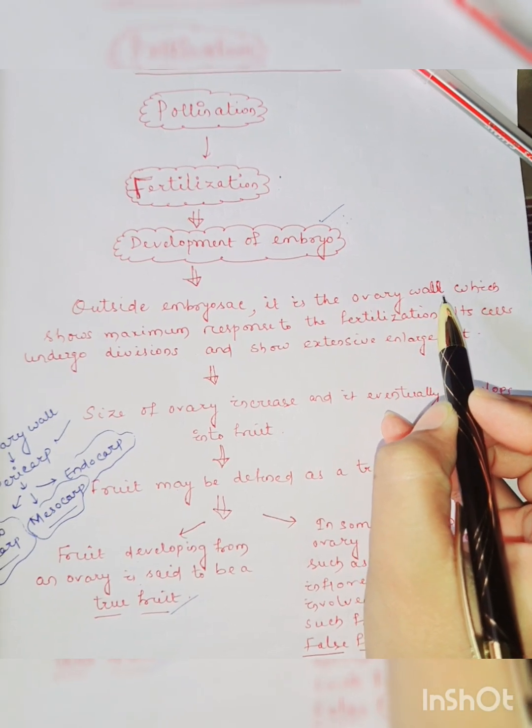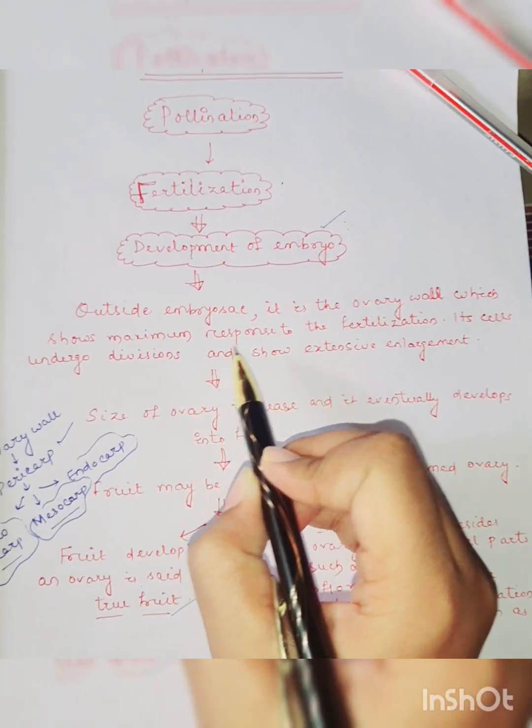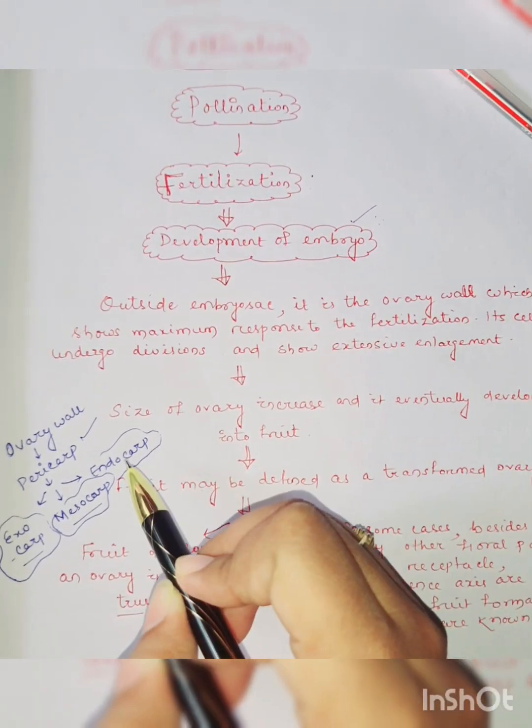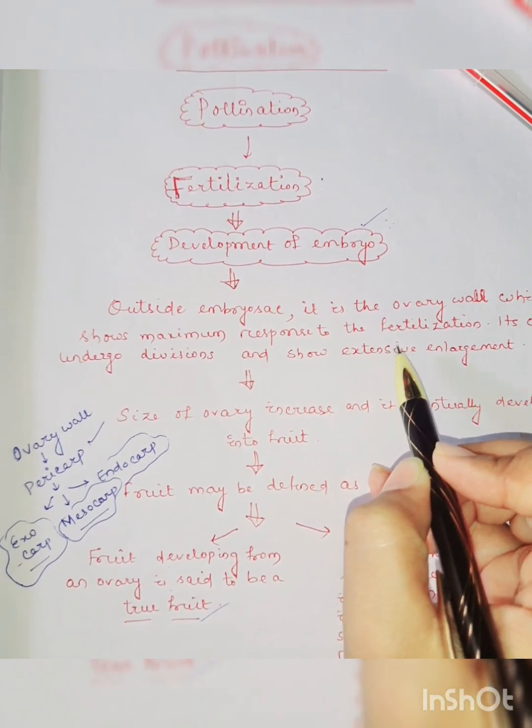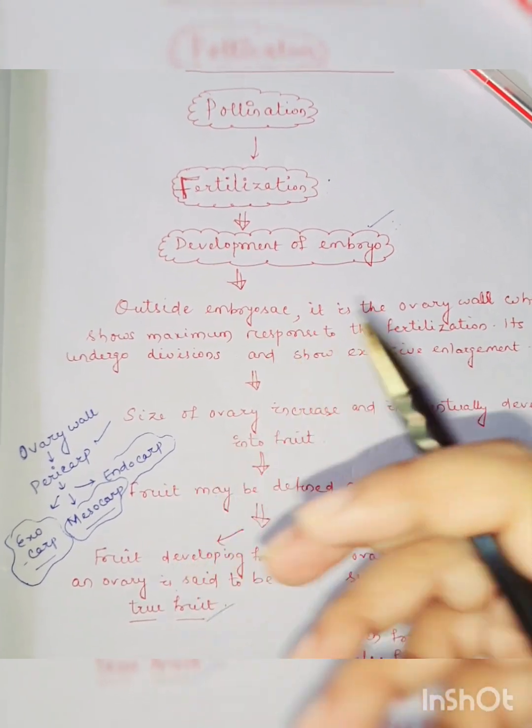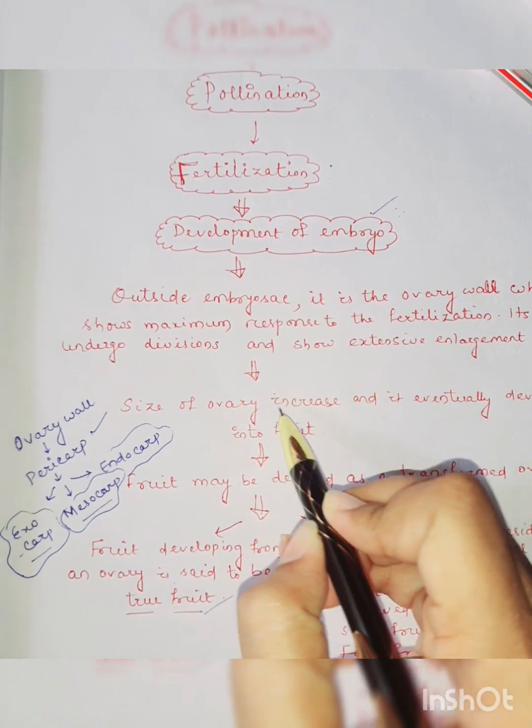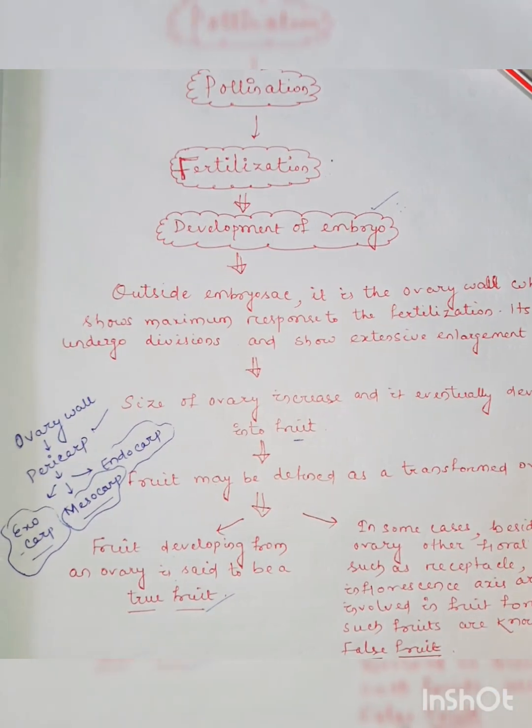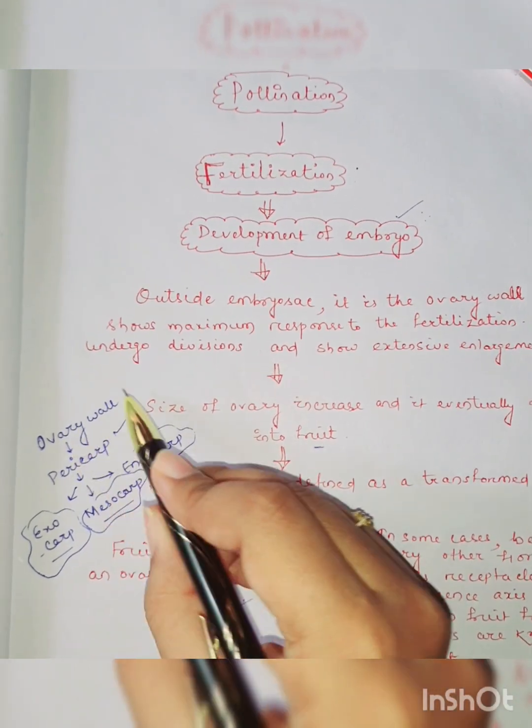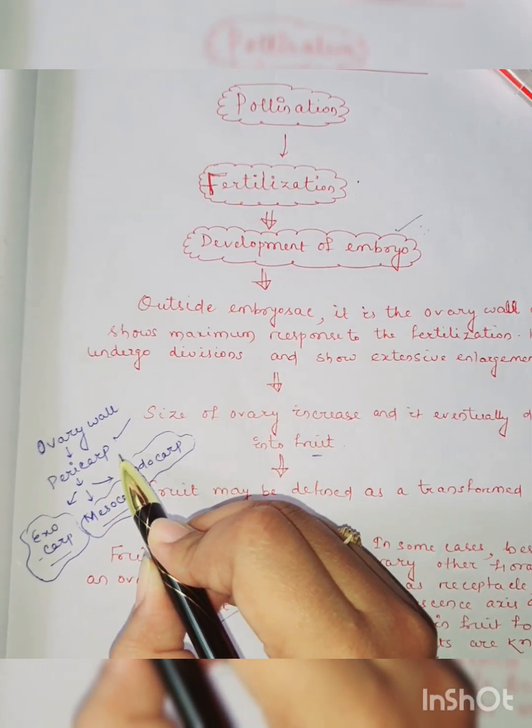Outside the embryo sac, it is the ovary wall which shows maximum response to the fertilization. Its cells undergo divisions and show extensive enlargement. The size of ovary increases and eventually develops into the fruit.